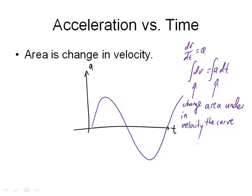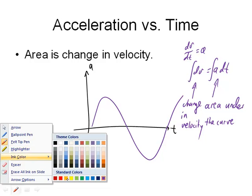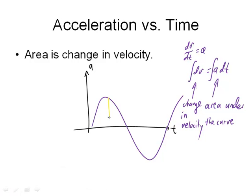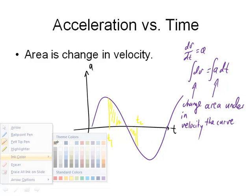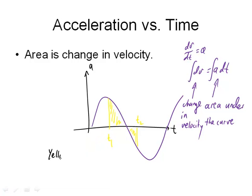And this is the change in velocity. It's not the velocity. It's the change in velocity. And so, I might have, using yellow again, an area from here. Let's say to here, t1, t2. And that yellow area is the change in velocity.